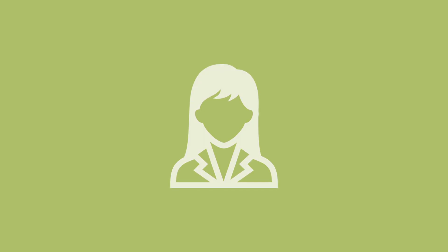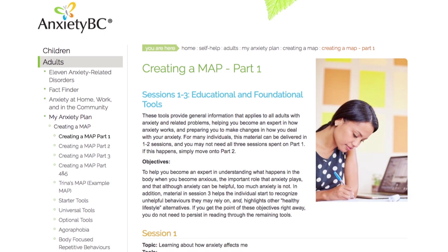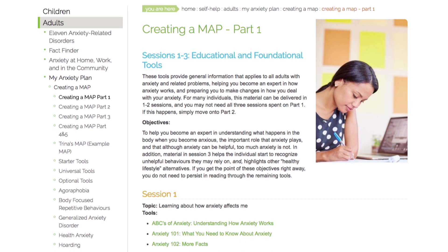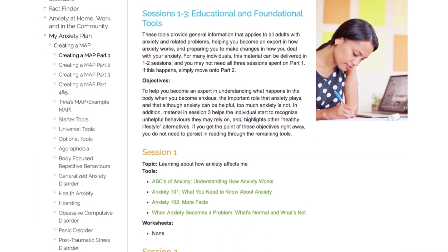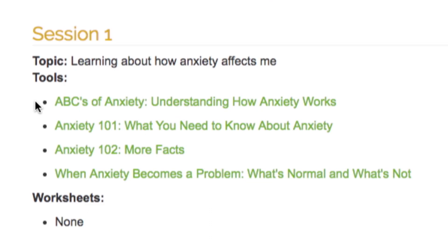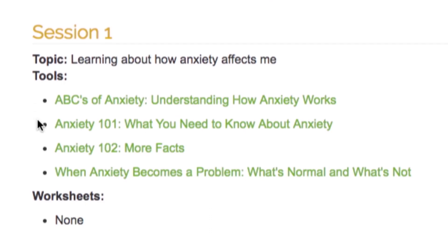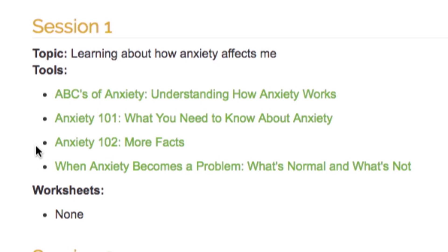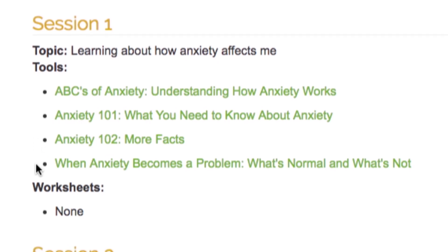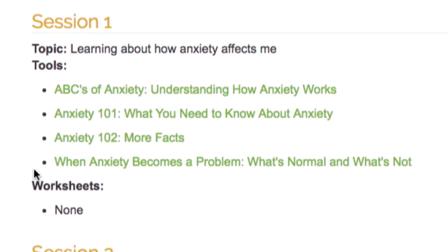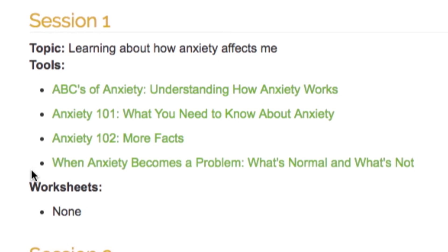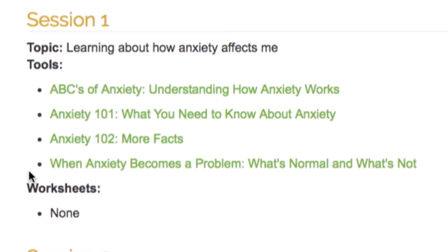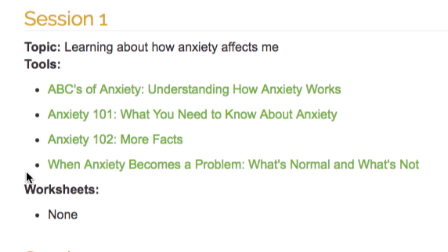For these reasons, we encourage you to seek outside care from a trained mental health professional whenever possible. We are now ready to walk through the four parts of a complete My Anxiety Plan, starting with Part 1. The tools in Part 1 provide general information that applies to all adults with anxiety and related problems. The objective of the sessions outlined in Part 1 is to help you become an expert in anxiety and to prepare you to make changes in how you deal with your anxiety as the program proceeds.